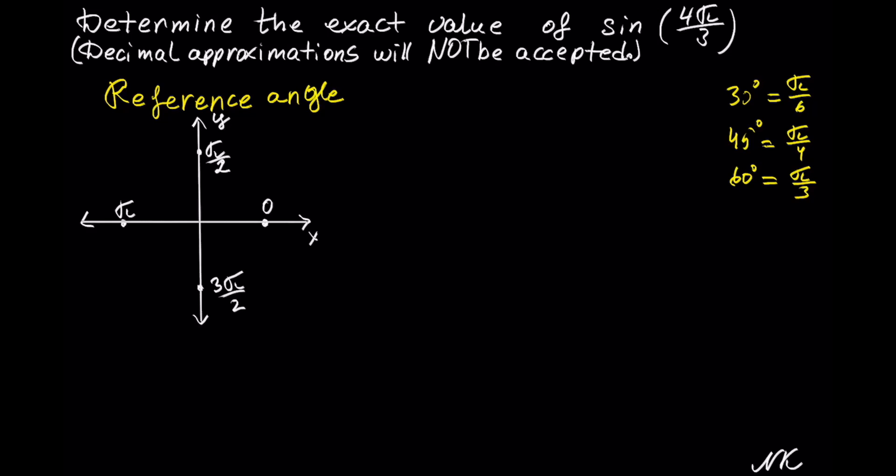We are looking for the reference angle of 4π/3. This ratio means that π is being multiplied by 4 and divided by 3. If π is being divided by 3, let's divide the π on our graph into 3 equal pieces. In our ratio we have 4π/3, so this means we have 4 of these pieces. Here's the first piece, second piece, and the third piece.